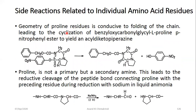The geometry of proline residues is conducive to folding of the chain, leading to cyclization — for example, benzoyloxycarbonyl-glycyl-L-proline paranitrophenyl ester, where paranitrophenyl is a good leaving group due to the electron-withdrawing group stabilizing the oxyanion. Since proline is a secondary amine, this leads to reductive cleavage of the peptide bond, which was also seen during chain fragmentation.